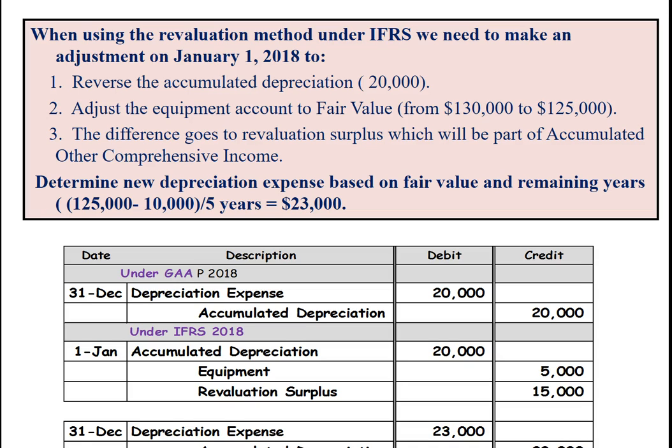Here are our journal entries. Under GAAP, nothing would change — we would book at year end the $20,000 depreciation, and the offset would be accumulated depreciation. Under the international standard, we would first reverse out the prior year accumulated depreciation, then adjust the equipment account by $5,000, and the difference would go to our revaluation surplus. That would be done on January 1st, and then at the end of the year, we would debit depreciation expense and credit accumulated depreciation for $23,000.